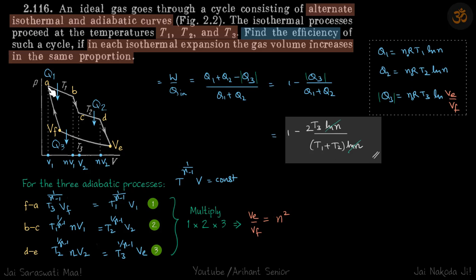At the end state when it's coming back here, there is no change in internal energy, so delta Q becomes delta W. Delta W is Q1 plus Q2 minus Q3. We divide by Qin which is Q1 plus Q2, so we can write this as 1 minus Q3 divided by Q1 plus Q2.